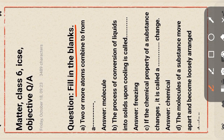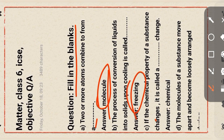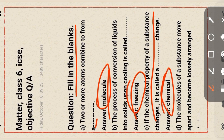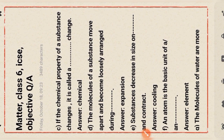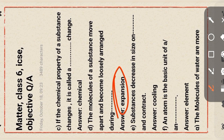Now the fill in the blanks section. Two or more atoms combine to form a molecule. The process of conversion of liquid into solid upon cooling is called freezing. If the chemical property of a substance changes, it is called a chemical change. The molecules of a substance move apart and become loosely arranged during expansion.